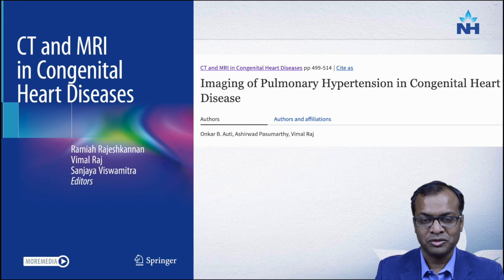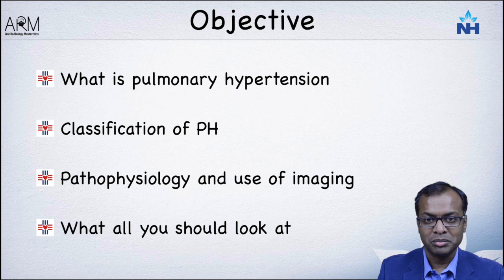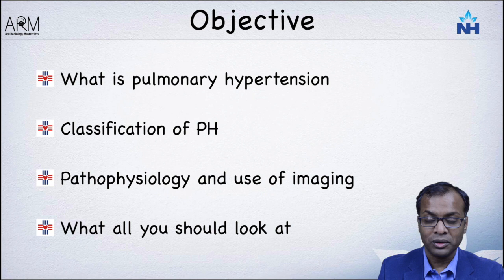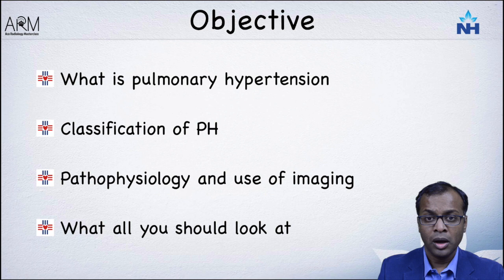This is a single book dedicated exclusively to congenital heart disease. My objectives today are to clearly help you understand what pulmonary hypertension is and its classification. I will also be talking about pathophysiology and the role of imaging in pulmonary hypertension. As we go along, I am going to show you multiple cases and summarize at the end by telling you what things you should look for in a patient suspected to have pulmonary artery hypertension.